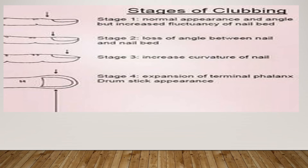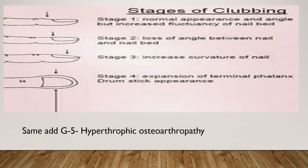There are four to five stages of clubbing. Grade one is softening and fluctuation of the nail beds. Grade two is loss of the angle or obliteration of the nail bed and proximal nail fold angle. Grade three is increased convexity of the nail folds. Grade four is thick distal phalanx, and some classify grade five as hypertrophic osteoarthritis. We should grade the clubbing whenever it is found in children.